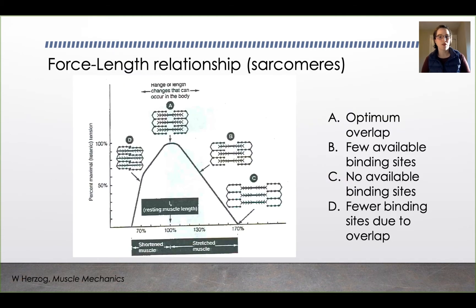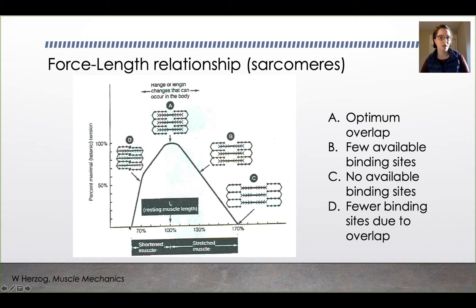The shape of the force-length curve is determined by the amount of overlap between the actin and myosin filaments. In region A at the top, there's optimum overlap and consequently maximum force generation. On the other side, there are few binding sites available, so you get less force. Down at region C at the very bottom, there are no binding sites available, so you get no force. Similarly on the D side, because of overlap, there are fewer binding sites available down to no binding sites, so you get less force.